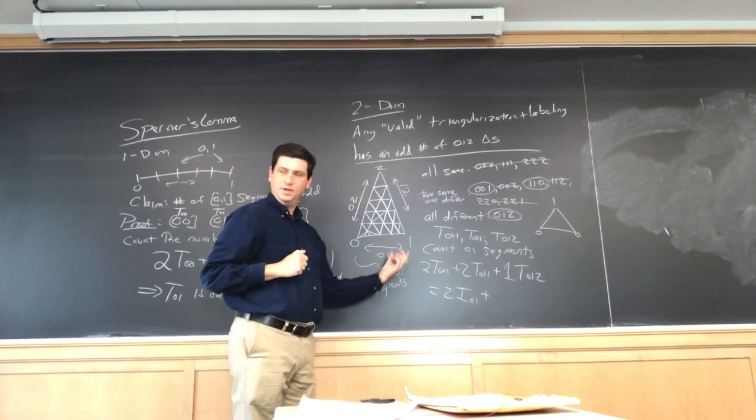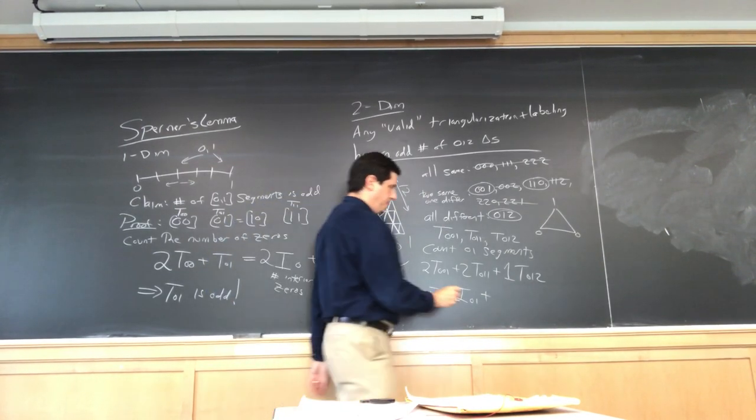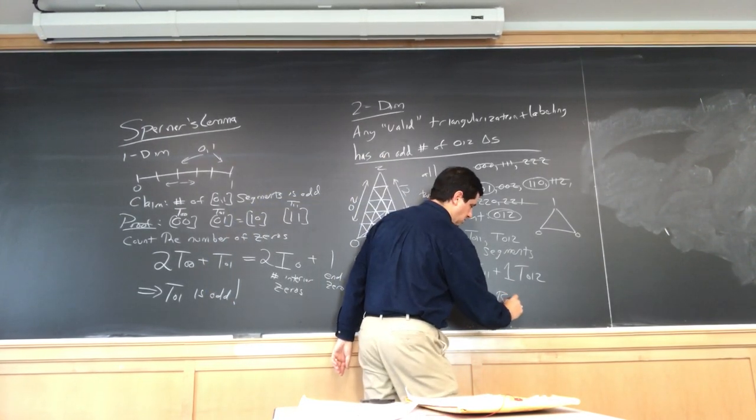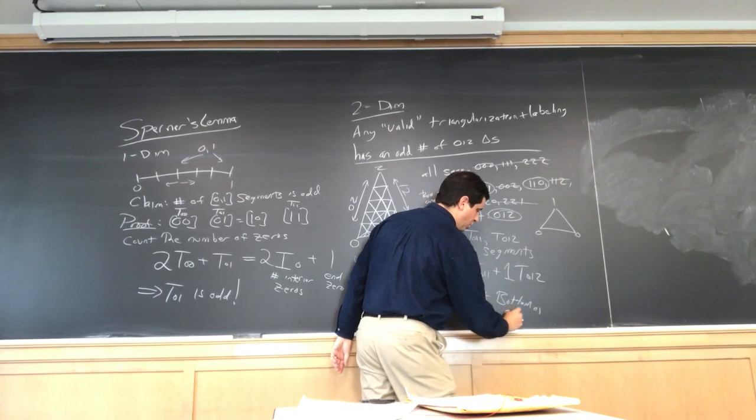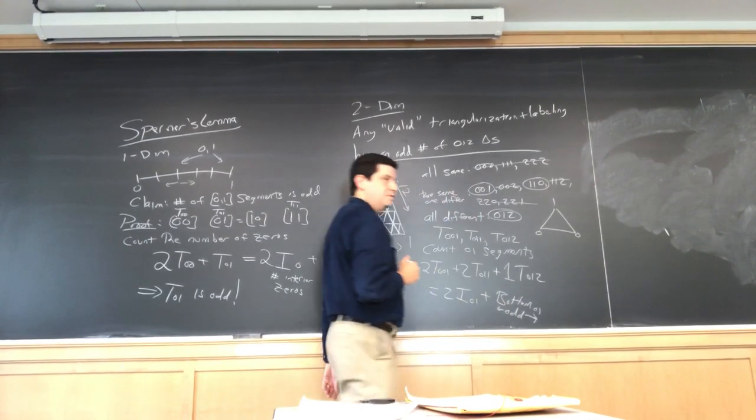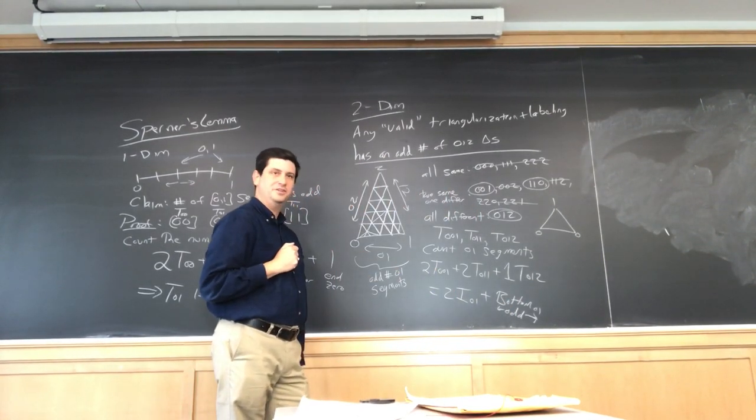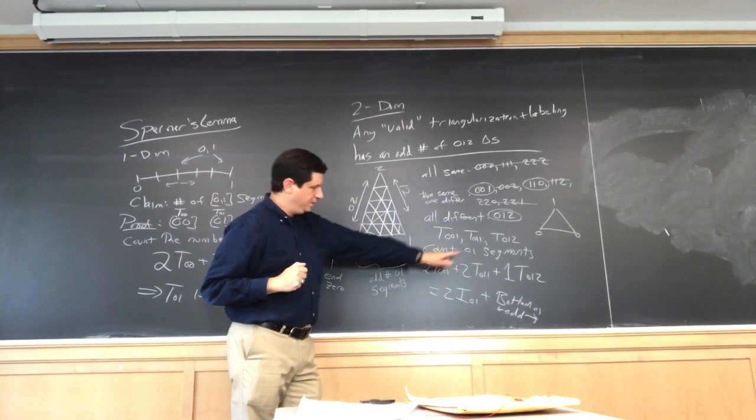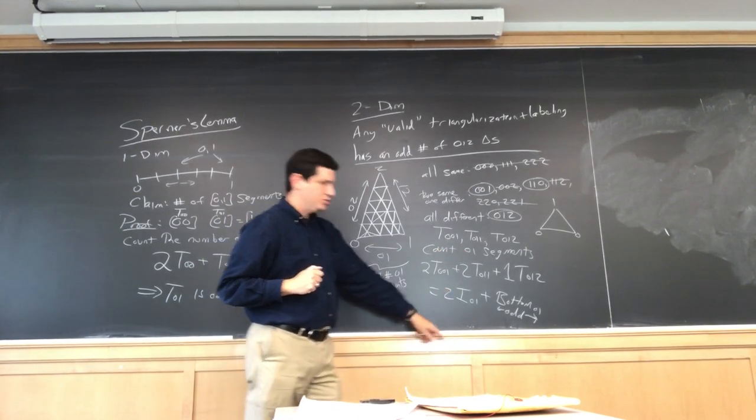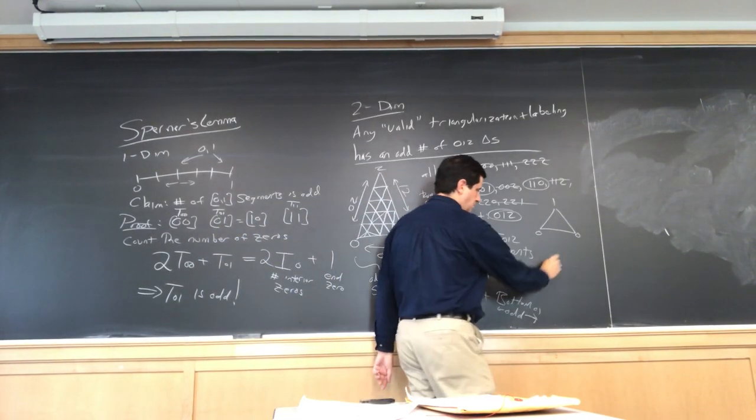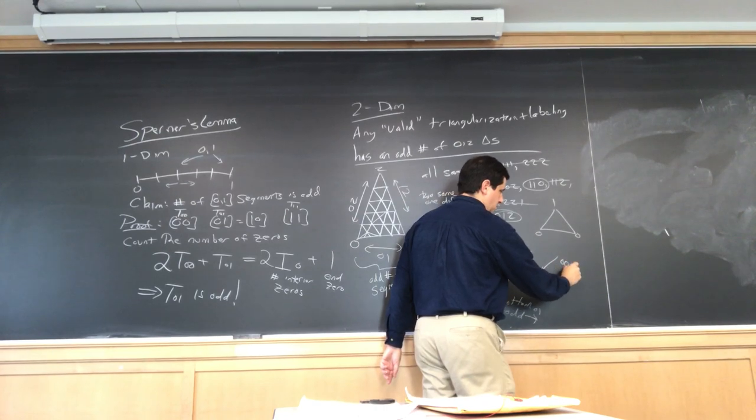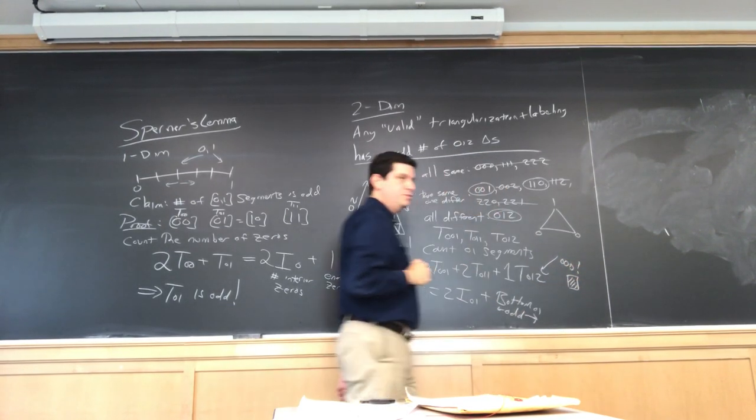So, this is going to be twice the number of interior 0, 1 segments. Right? Plus what? Plus the number on the bottom. And this is odd. So, the proof is not that bad. Even, even, even. So, this must be odd. And that finishes the proof.